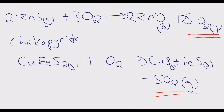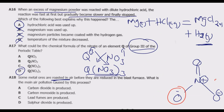Going back to the options: carbon dioxide is produced — incorrect, there is no carbon dioxide produced. Carbon monoxide is produced — incorrect. Lead fumes are produced — incorrect. Option D, sulfur dioxide is produced, is the correct answer.